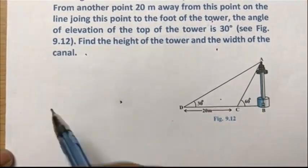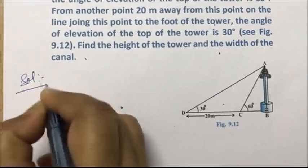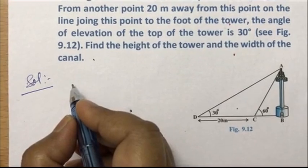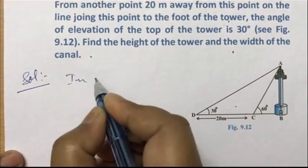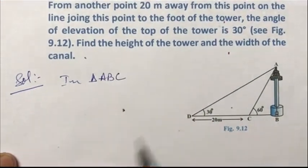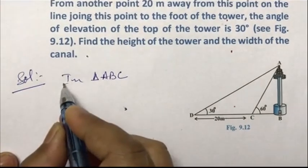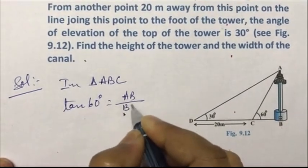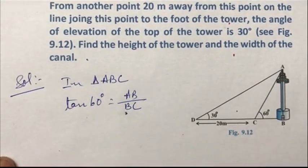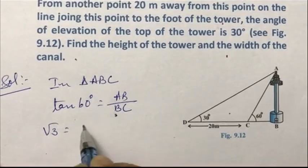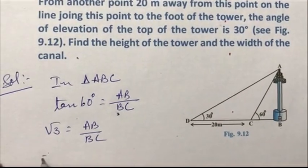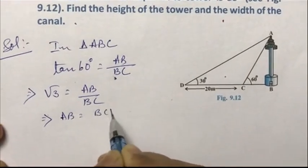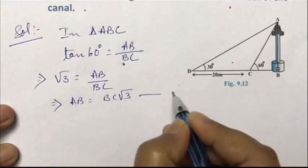We know AB is the tower. Now consider triangle ABC — take out your copies and solve along with me. In triangle ABC, tan 60 degrees is equal to AB by BC. What is tan 60? It is root 3. So AB is equal to BC times root 3. Let us name this as equation number 1.